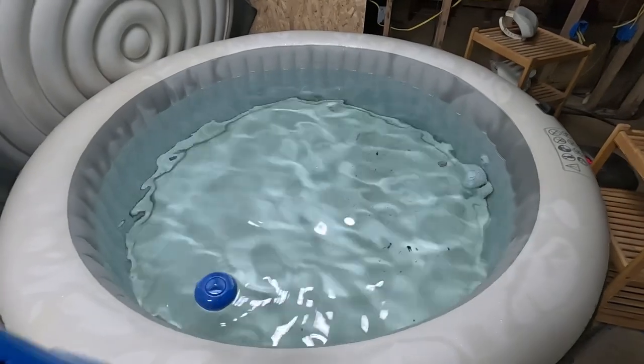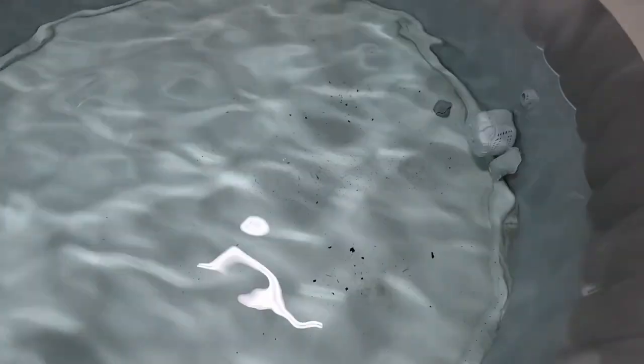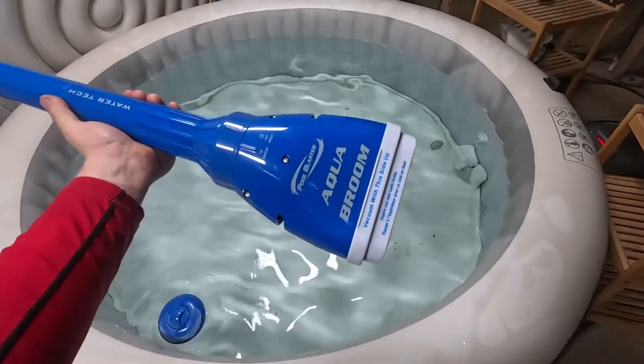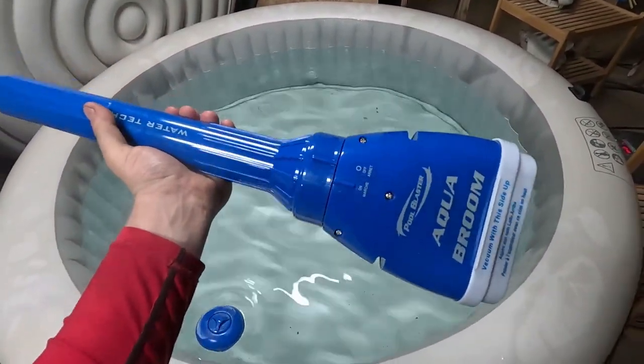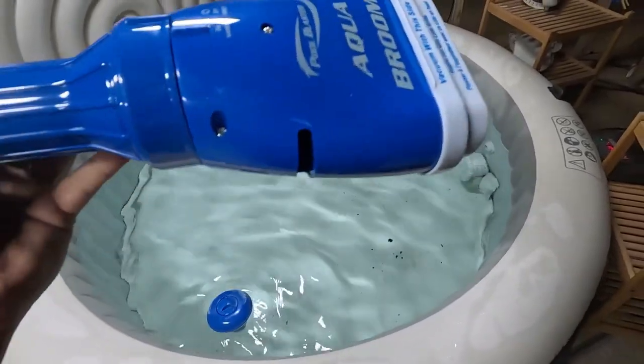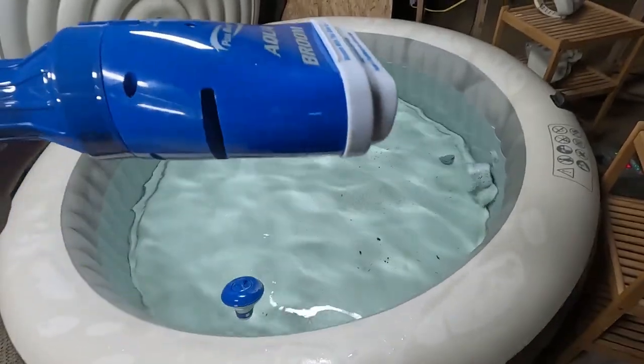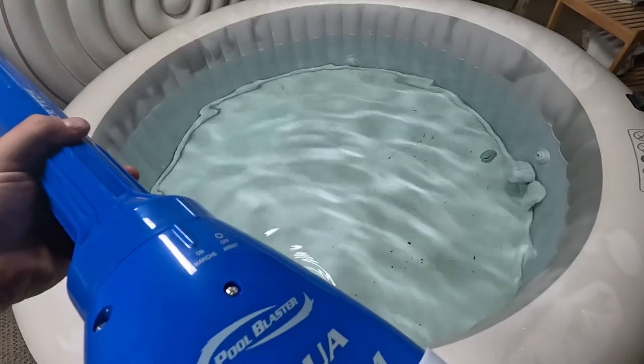Okay guys, I've got an Intex inflatable hot tub here and it's accumulated some sediment on the bottom. Looking for a good way to clean it off, so I'm going to try out the aqua broom. This thing's like $60 on Amazon, just runs on five D batteries, and it comes with some microfiber nets that go in it. I did not put those in. I'm going to try it without them first, just see what it does.